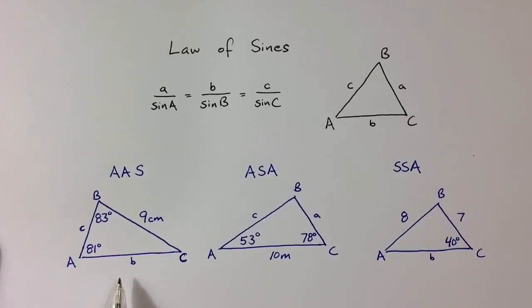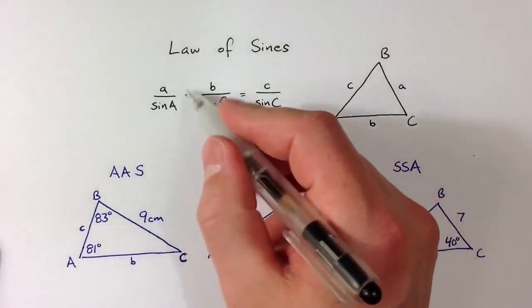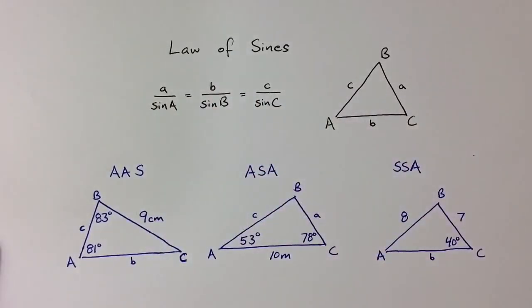The law of sines is useful in these three situations because for all three we're given an angle measure and an opposite side length. And so that gives us a complete ratio, one of the complete ratios in the law of sines.